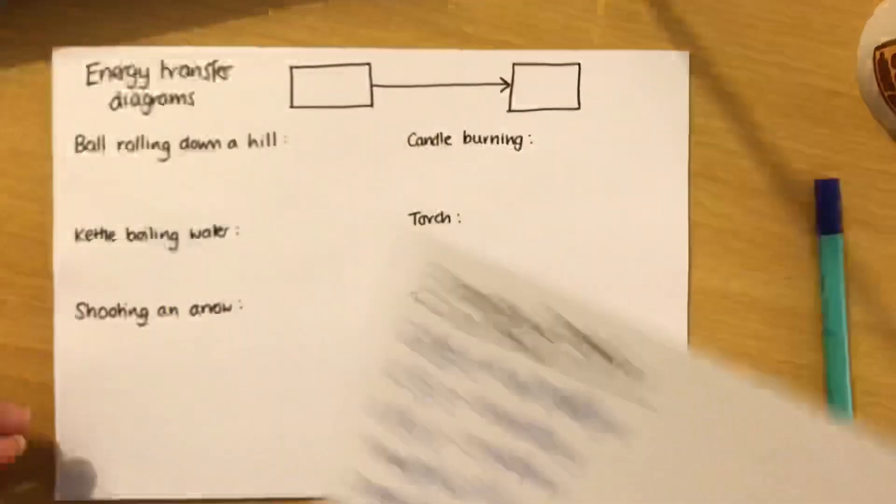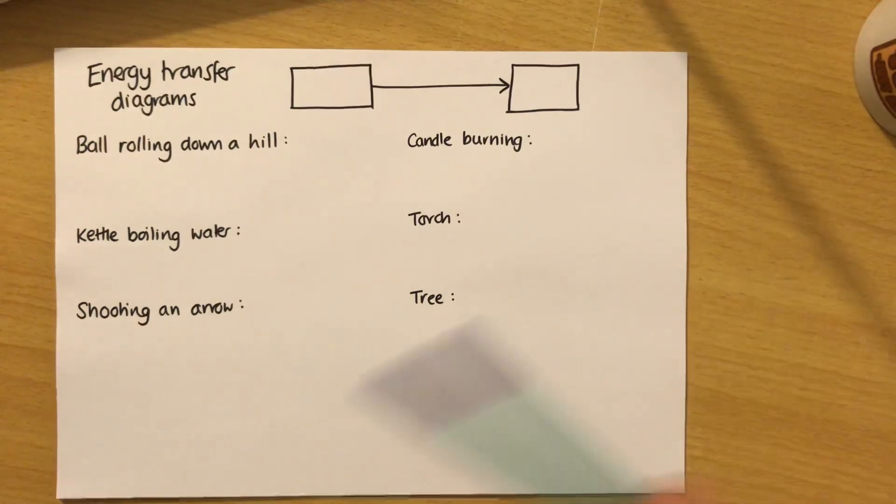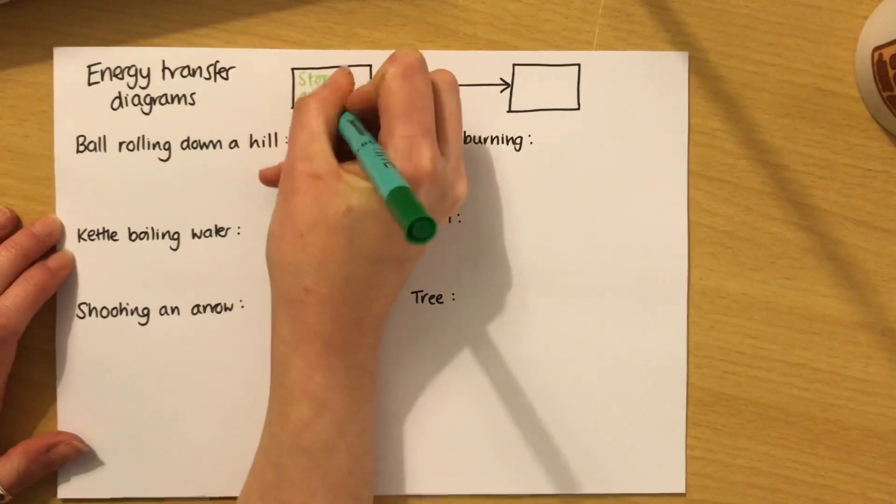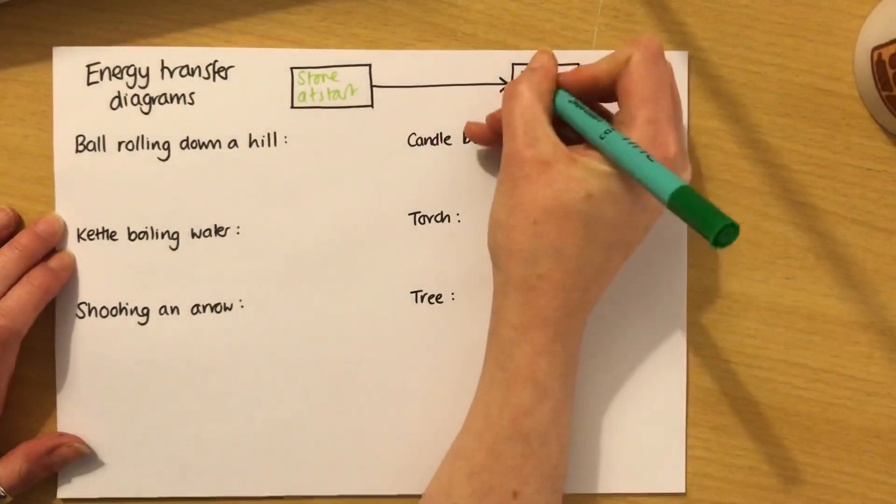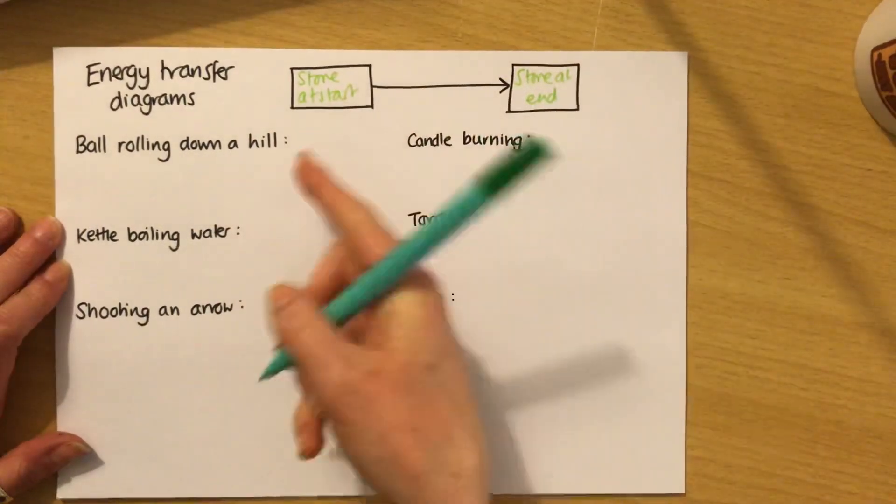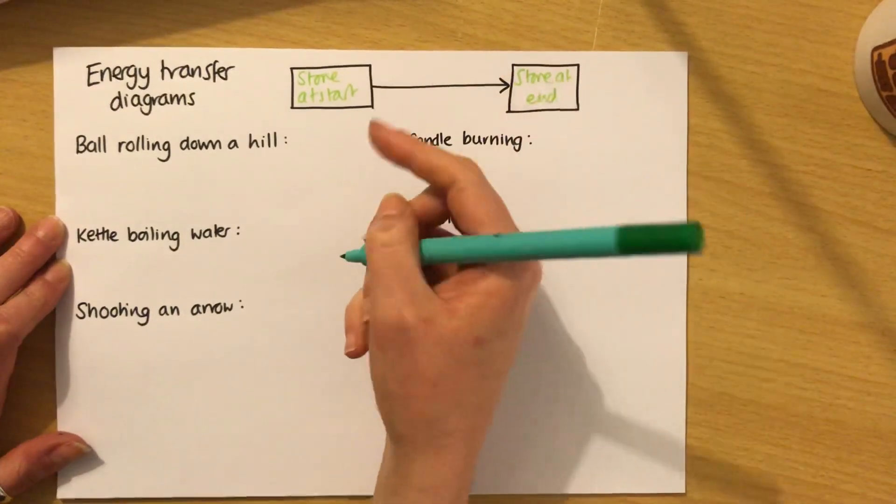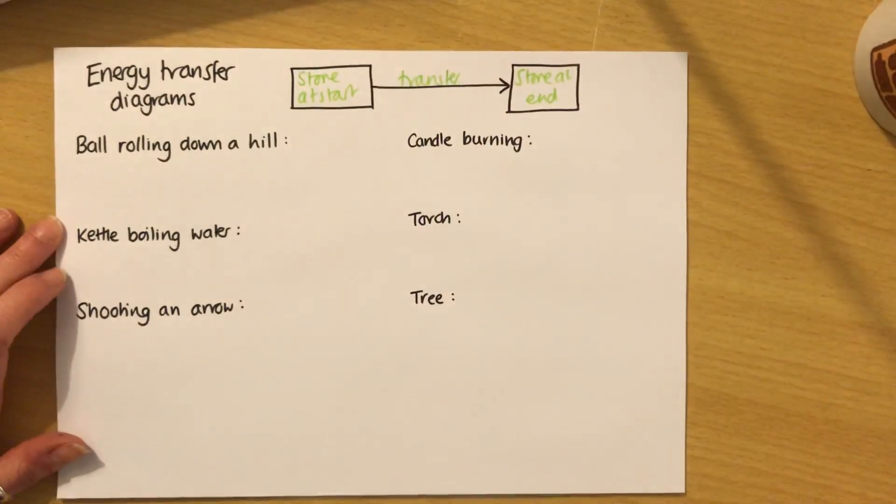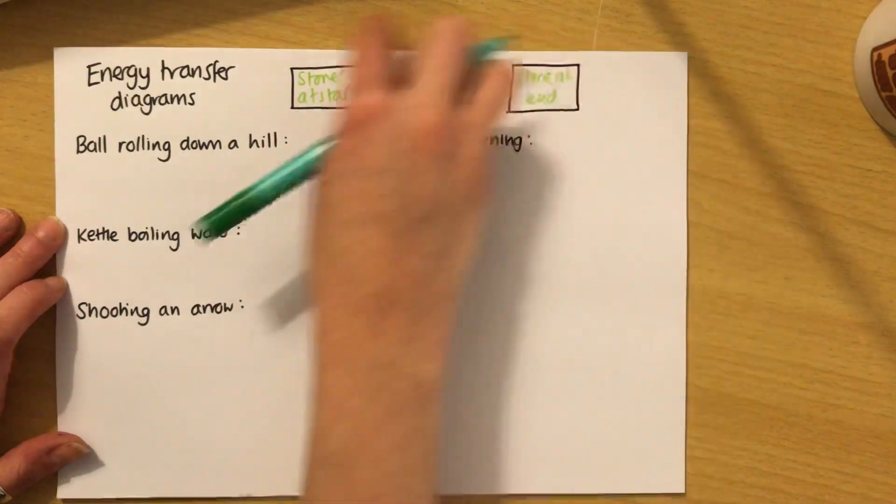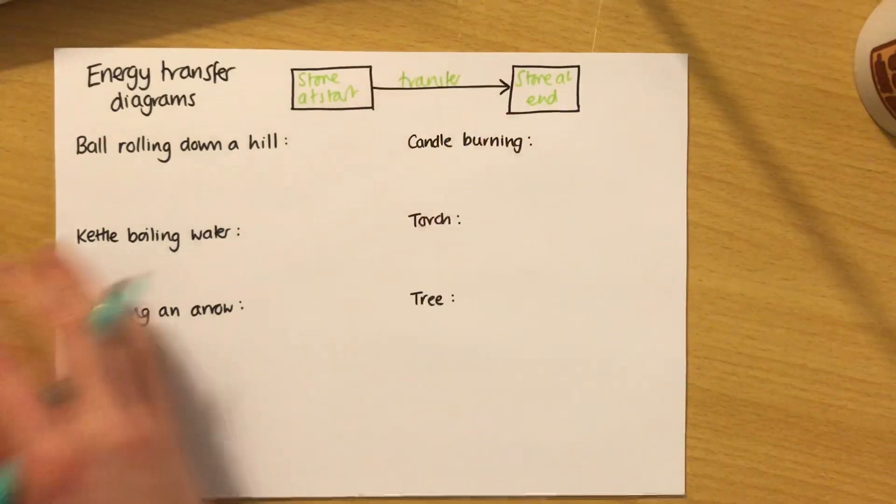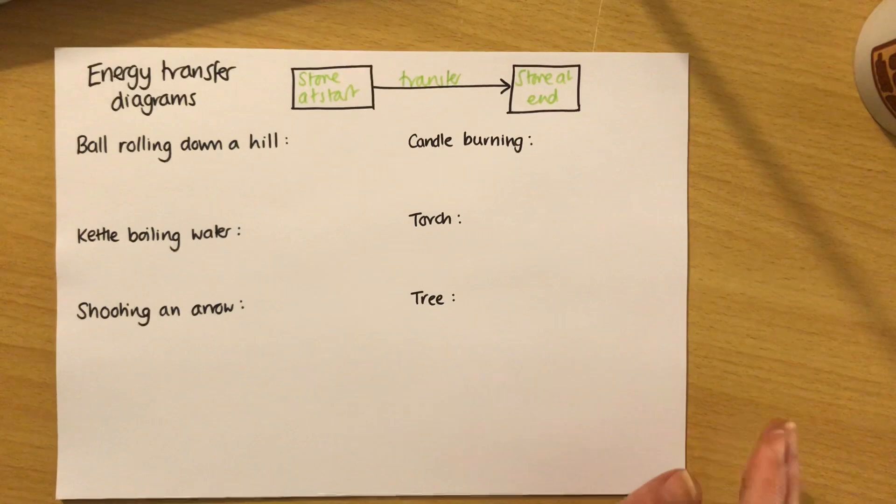Now we need to use these in our energy transfer diagrams. This is quite a tricky part of the physics. For any energy transfer diagrams, you have to think about what the store is at the start, and you often write that in a box. Then you need to think about what the store is at the end. You've got to make sure that these are actually stores and they're not transfers. So you can't have light here, you can't have heat here, you can't have by forces here. The transfer is written along the arrow. This is a very simple one. We'll see when we come to some examples that sometimes there's more than one store, more than one transfer. We're going to simplify some of these situations to make them easier, but generally this is how it works.